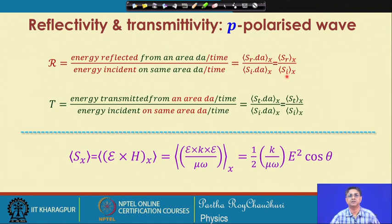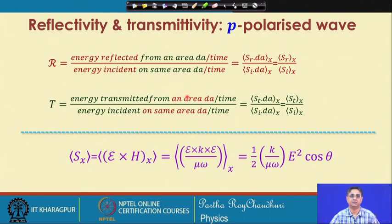This gives us S_r^x / S_i^x for the energy reflection coefficient. Similarly, the energy transmission coefficient is defined as the ratio of energy transmitted from an infinitesimal area dA per unit time to the energy incident on the same area dA per unit time, and can be expressed using the x-component of the time-averaged Poynting vector of the transmitted wave.